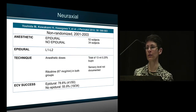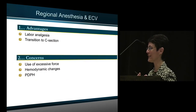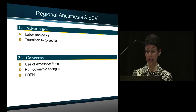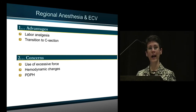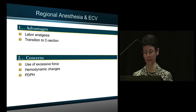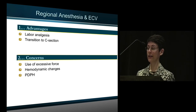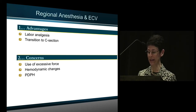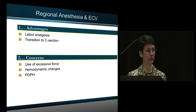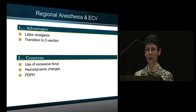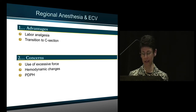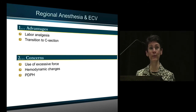What are the advantages of using a regional anesthetic for ECV? If you use an anesthetic level, you may contribute to the procedure's success. If the version is successful and induction of labor is planned, she already has an epidural that can be used for labor analgesia. Should fetal distress or maternal hemorrhage occur, an anesthetic is in place to facilitate a smooth transition to C-section. Concerns include: a solid anesthetic level may allow the woman to tolerate excessive force, resulting in maternal or fetal morbidity; hemodynamic changes associated with neuraxial anesthesia need to be managed; there is a risk of dural puncture and post-dural puncture headache; and delayed discharge, as she must be observed on the labor floor before going home.